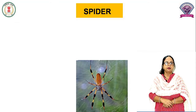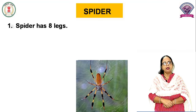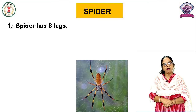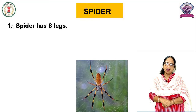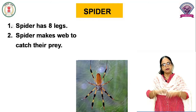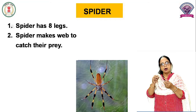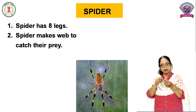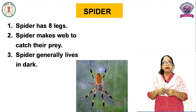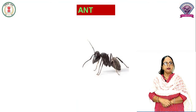Then Spider. Spider has eight legs. Spider — aapne jaana kise keh rahe hain? Makdi ko hai na? Makdi ke kitne pair hote hain? Aath pair hote hain. Spider makes a web to catch their prey. Makdi jaala bunti hai aur usme wo apne bhojan ko — keede makode — use pakdti hai. Spider generally lives in dark. Aamdataur par makdi andhere mein hi rehti hai.